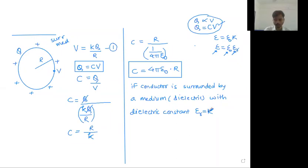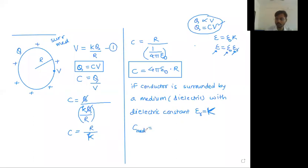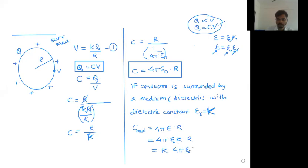Make sure the dielectric constant looks like capital K. We generally modify small k like this. So this is our conductor surrounded by a medium having dielectric constant K. In that case, capacity when there is a medium - C_med - is 4 pi epsilon into R. Now 4 pi epsilon can be written as epsilon zero into capital K into R. So you can square bracket this formula as K times 4 pi epsilon zero R.